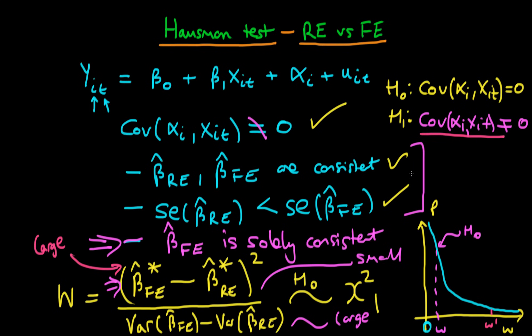To summarize: if we conduct this test and do not reject the null hypothesis, we conclude that both random effects and fixed effects are consistent, but we should use random effects because its variance is lower. Whereas if we reject the null hypothesis, we conclude that fixed effects is the estimation strategy to use, since only fixed effects is consistent in that circumstance. Essentially, the statistic W compares the consistency of the two estimators — the numerator — with the relative efficiency gains obtainable by using random effects over fixed effects — the denominator.